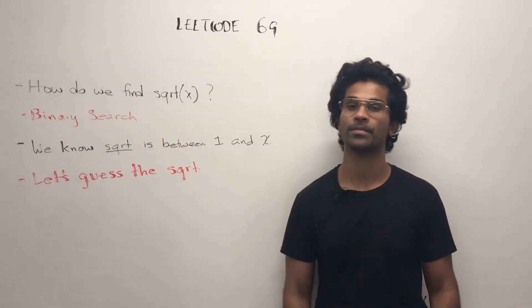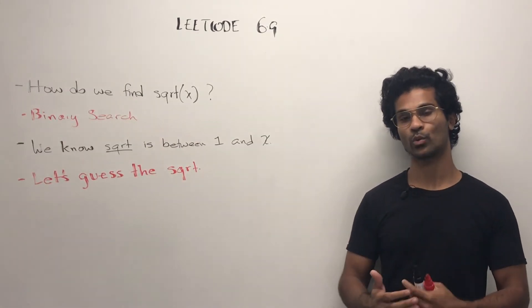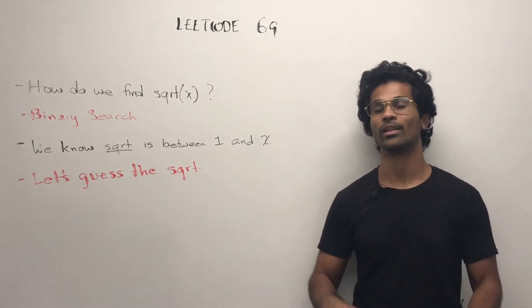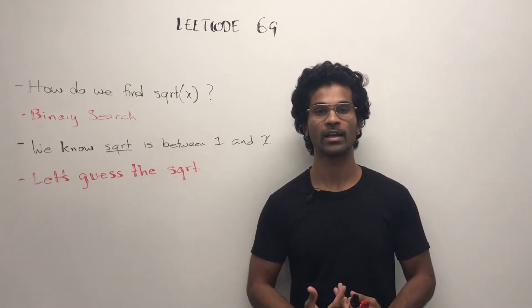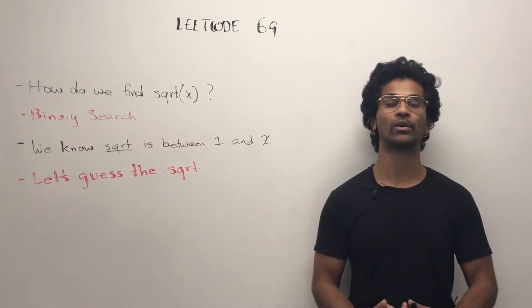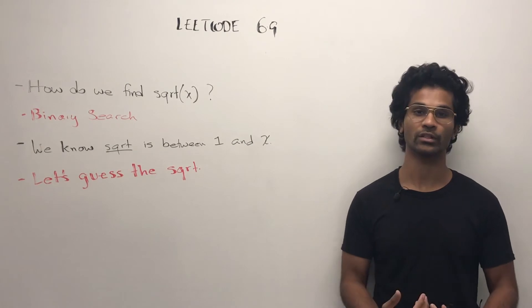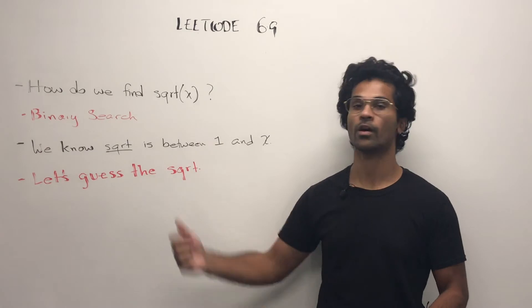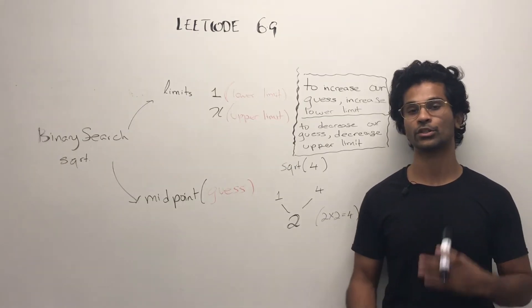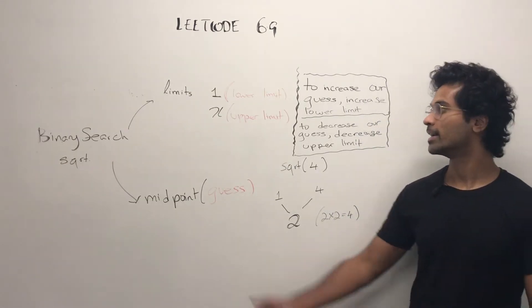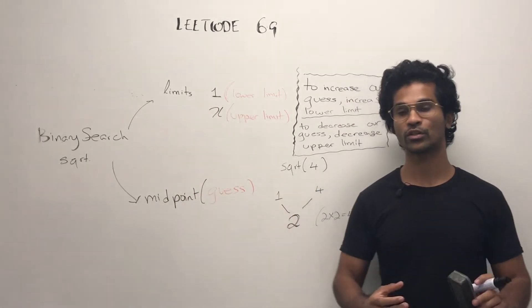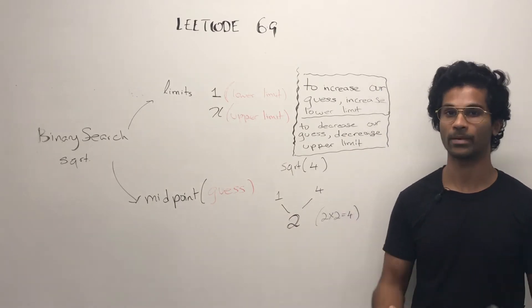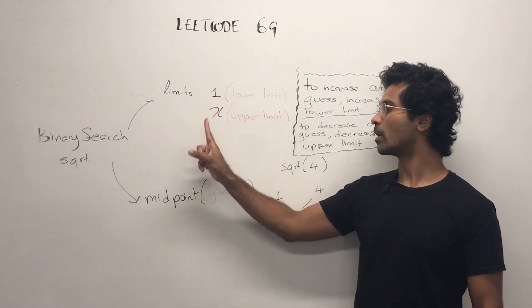We're going to be using binary search, but we know that the square root of x is definitely between 1 and x. So let's guess the square root and use binary search to help narrow down our search space efficiently to see what is the closest guess we can get to our square root of x. The lower limit is 1, and the upper limit is x.